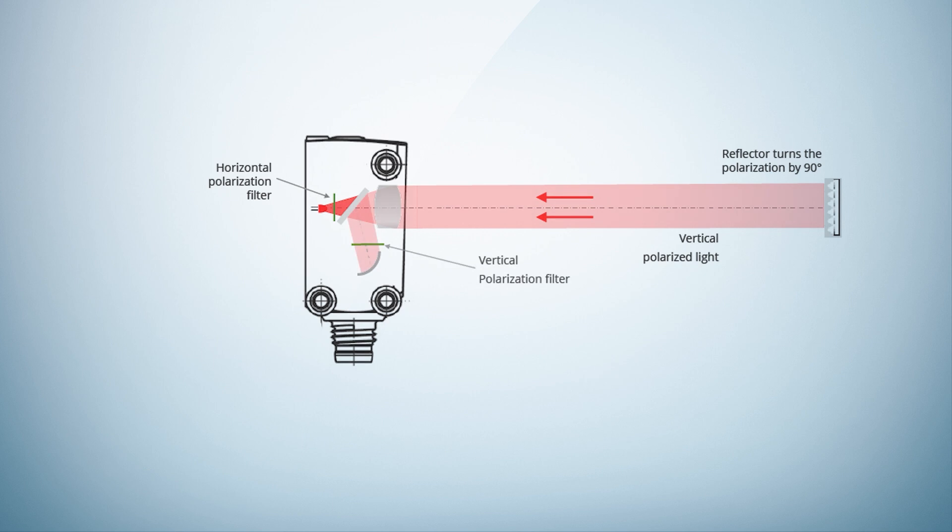The vertically polarized light passes through a polarization filter in the sensor, which only allows vertically polarized light to pass through. Via a photodiode, the sensor detects the light from the reflector and knows there is no object in the light beam.